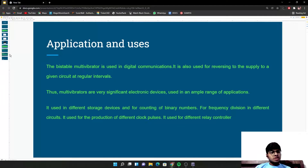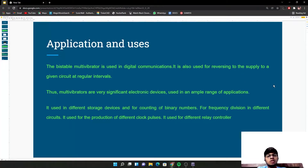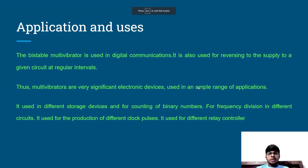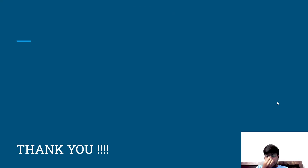The bistable multivibrator is used in digital communication. It is also used for reversing the supply to a given circuit at regular intervals. Multivibrators are significant electronic devices used in a wide range of applications — including different storage devices, counting of binary numbers, frequency division in circuits, production of clock pulses, and relay controllers. I hope that you have understood the working, meaning, and applications of the bistable multivibrator. Thank you. Stay vibrant.